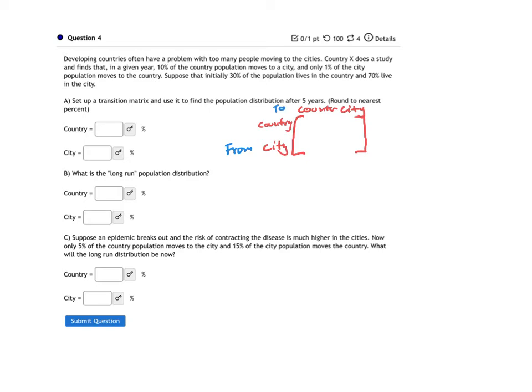So what I'm going to do is say, first of all, it says in a given year, 10% of the country population moves to the city. So if they start in the country, of those country people, 10% of them will be in the city the next year, which means 90% of them will still be in the country. And of the city population, only 1% moves to the country. So that's 0.01, which is 1%, which means that 99% will still be in the city. So that's going to be our transition matrix.